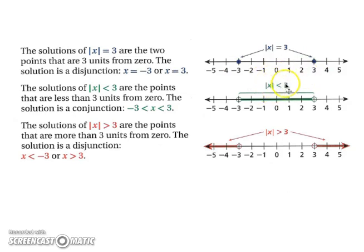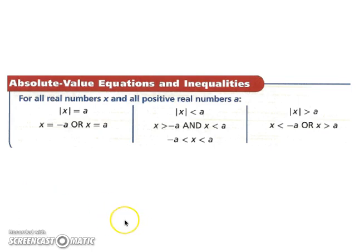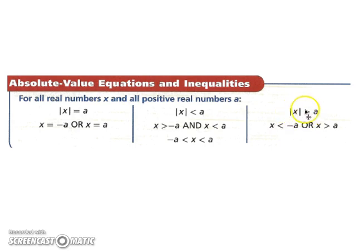If the absolute value of x is less than three, the solution is a conjunction: x must be between negative three and three. If it is greater than three, that becomes a disjunction — x is either less than negative three or greater than positive three. As a general table: |x| = a gives x = ±a; |x| < a gives −a < x < a (conjunction); |x| > a gives x < −a or x > a (disjunction).